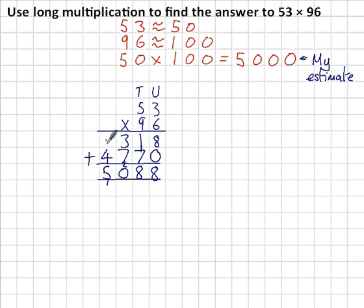Then I need to add these two numbers together. 8 and 0 is 8, 1 and 7 is 8, 3 plus 7 is 10, and then the 1 plus the 4 is 5. Then my answer is 5,088.